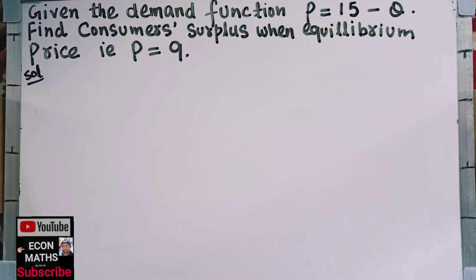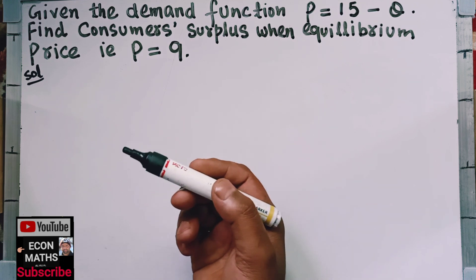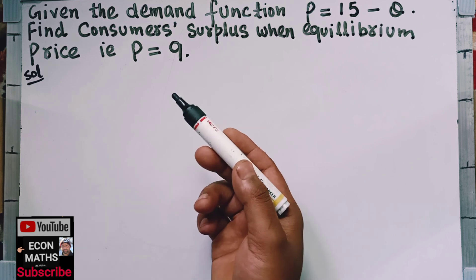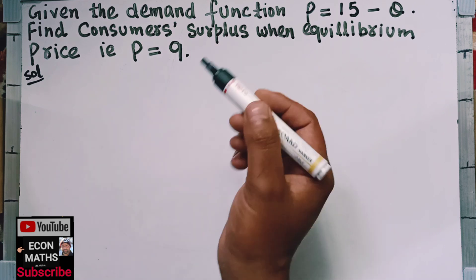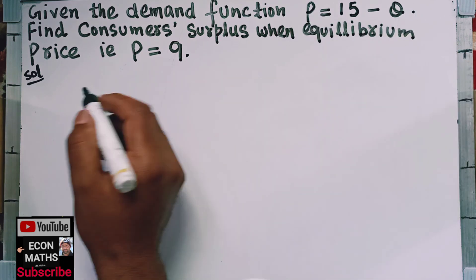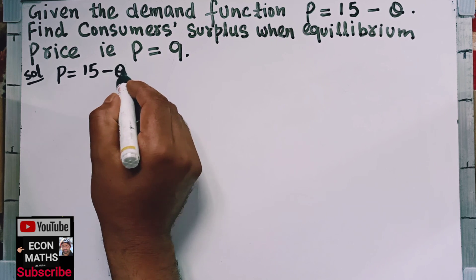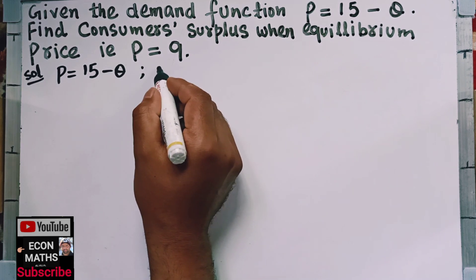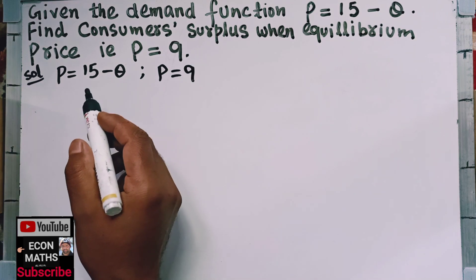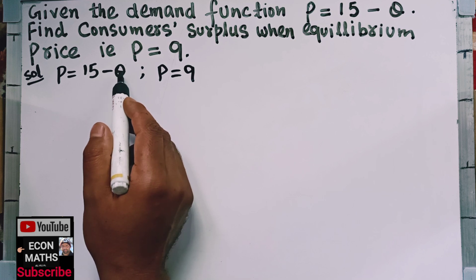So, we have to find the consumer surplus. To find the consumer surplus, we will first find the equilibrium price and equilibrium quantity. Since equilibrium price is given, we will find the equilibrium quantity. Therefore, we will write this demand function, that is P is equal to 15 minus Q. Also, the value of P is given — the equilibrium price is 9. Therefore, we will put the value of P in this demand function to get the equilibrium quantity.